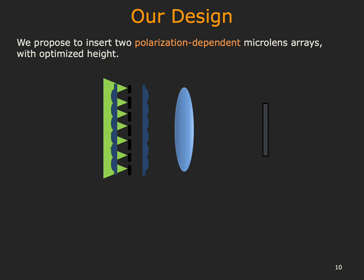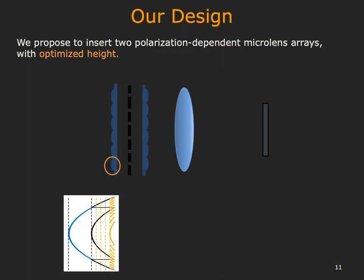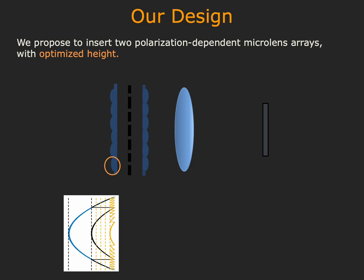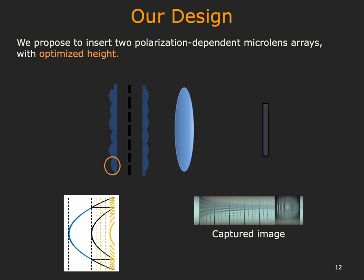Due to the polarization-dependent implementation, any light emitting from the display can pass through the face mask without being modulated. Detailed working principles are described in the paper. Polarization-dependent optical elements are only available in thin formats, and thin face masks cause chromatic aberration — for example, face masks with a certain fixed height produce a greenish image. We therefore optimize the height for each microlens to suppress chromatic aberration, and the resulting image has more consistent performance across RGB channels.